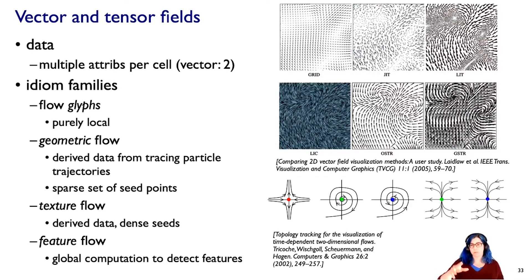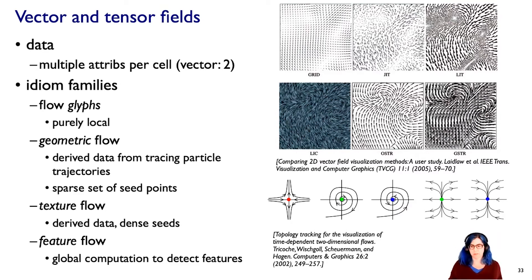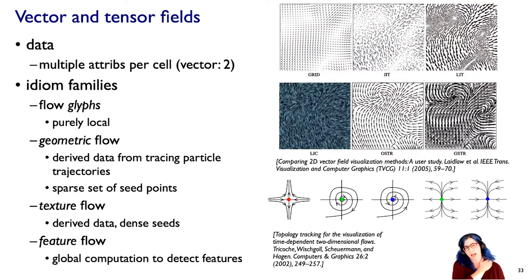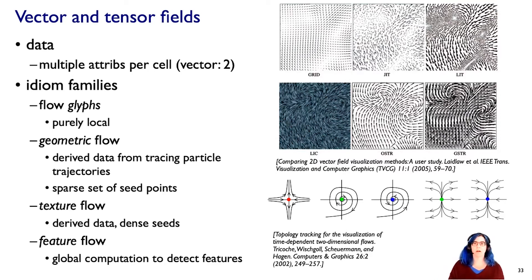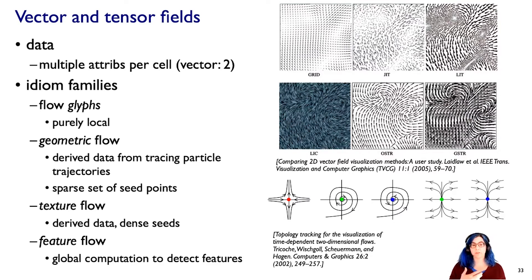The major classes of idioms — we're actually seeing some examples on the upper right — include using a glyph. At many of these points in space, at these grid-sampled points, we can show some glyph trying to convey the direction of flow and the magnitude of flow at that spot. This is a very local way to show it — we make a local decision for a glyph at each one of these points in space. That's what we're seeing along the top: a number of local glyphs.